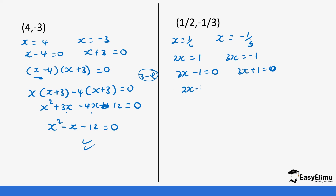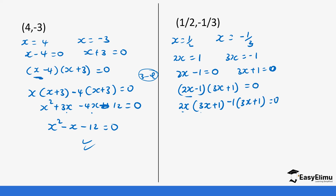We are going to expand using this expression. So 2x into bracket (3x plus one), then minus one into bracket (3x plus one), equals zero. So 2x times 3x gives us 6x squared. Then 2x times one gives us 2x. Then minus one times 3x gives us minus 3x, and minus one times positive one gives us minus one. Remember: minus times positive is minus, and minus times minus is positive.